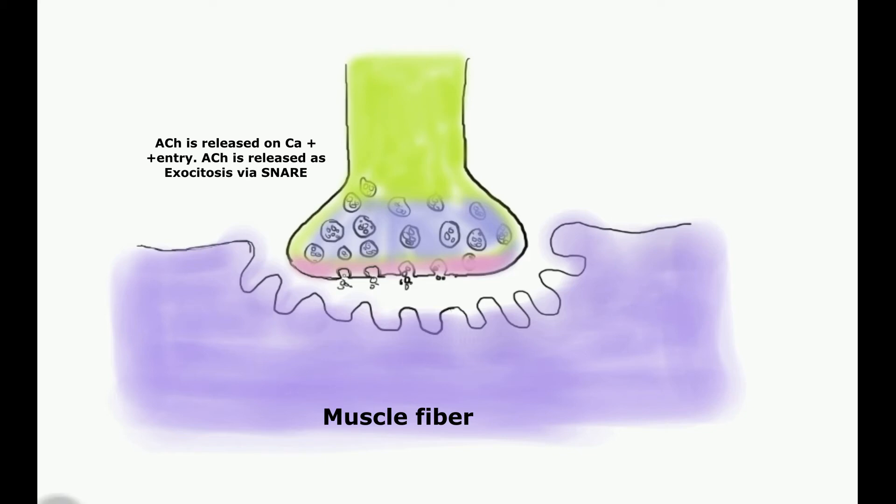The muscle fibers are shown just beneath the end part of the neuron, having the dark and light bands alternating with Z lines. In between two Z lines we have the sarcomere, which is the functional and structural unit of the muscle fiber.